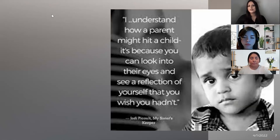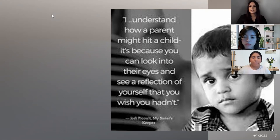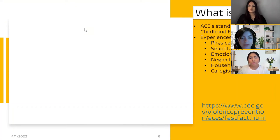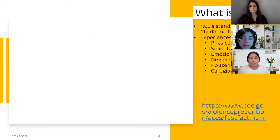Here is a quote: "I understand how a parent might hit a child. It's because you can look into their eyes and see a reflection of yourself that you wish you had." A child who is exposed to any kind of abuse or neglect is in a constant state of fear and stress, which causes the brain to adapt to that environment. This leads to impaired brain development, affecting logical thinking and memory. Toxic stress from ACEs can cause brain development delays and affects how the body responds to stress.